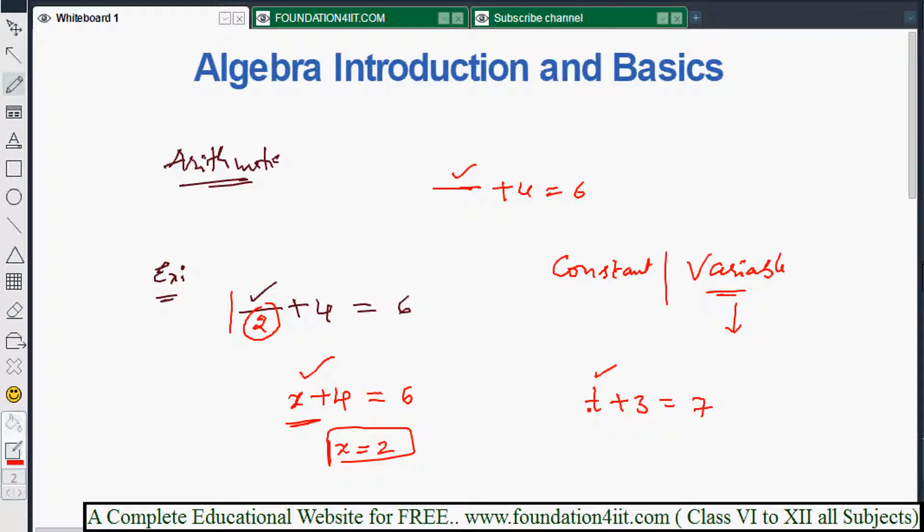So t is a variable. This value we need to find out to make this statement true. For what value of t does it become true? That means t plus three is equal to seven. If you keep one, one plus three is not seven, so this is not correct. If t equals four, then four plus three is seven, so it's correct.